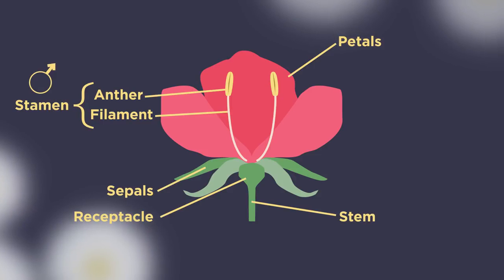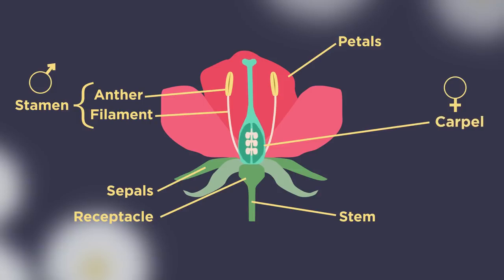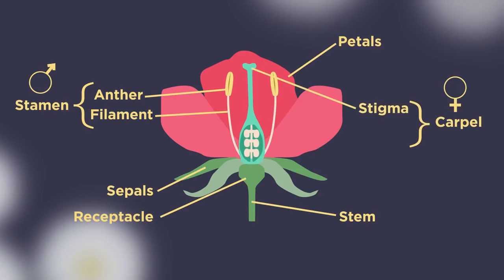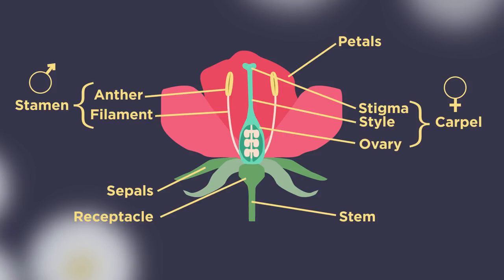The female part of the flower is called the carpel and this consists of three parts: the stigma, a sticky landing for pollen; the style, where the pollen grain descends; and the ovary, where the female gametes or sex cells are located. Within the ovary, ovules produce female gametes.